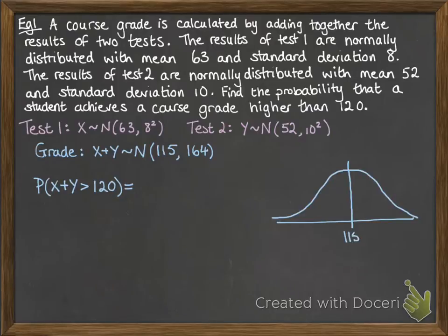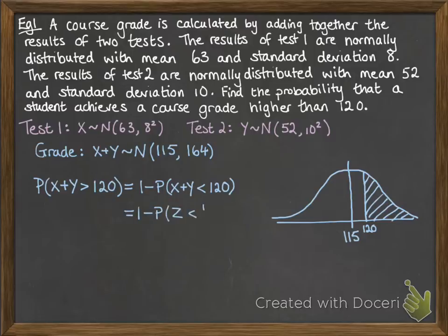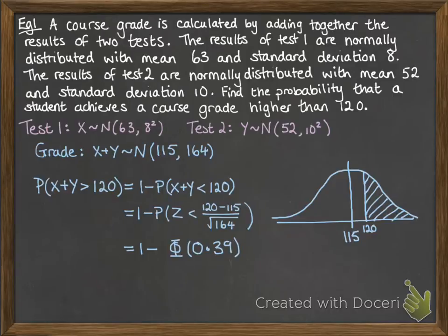Now we want the probability that X plus Y is greater than 120. So here's our normal curve. With a mean of 115, we're looking for it being more than 120. So that's the same as 1 minus the probability that it's less than 120. So putting it into our Z curve, we're just going to do 120 minus 115 divided by the square root of 164. So we're looking for 1 minus Φ(0.39). And you can read that off of your tables to get the final probability of 0.3483.